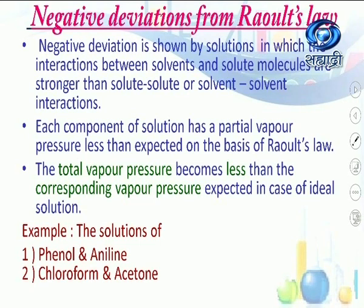Examples of solutions showing negative deviations: solutions of phenol and aniline, and chloroform and acetone. A short question you can ask: name the solution showing negative deviation, or name the solution showing positive deviation.